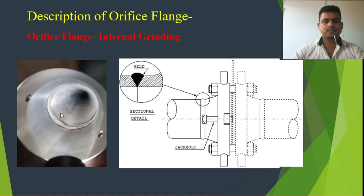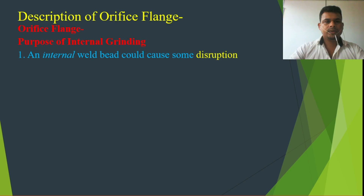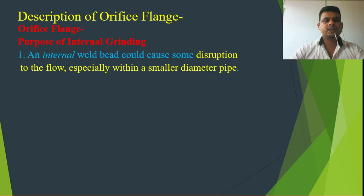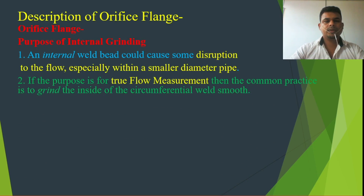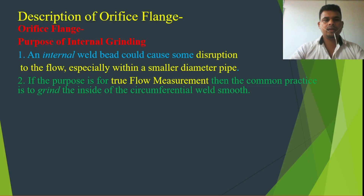The purpose of internal grinding: an internal weld protrusion could cause disruption of the flow, especially with smaller diameter pipes. If the pipe is small diameter and the welding is very near and the root protrudes, it causes some disruption during water or gas flow. Also, if the purpose is for true flow measurement, then the common practice is to grind the inside of the circumferential weld smooth.